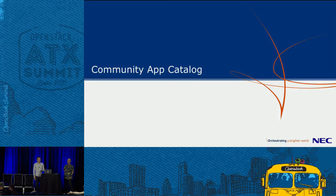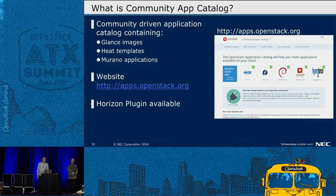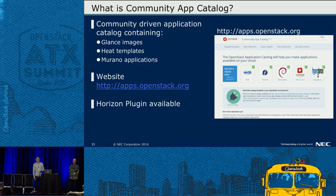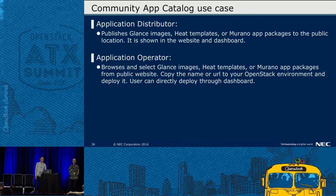Next is Community App Catalog. Community App Catalog is a community-driven application catalog containing Glance images, Heat templates, and Murano application packages. Community App Catalog's website is at apps.openstack.org. A Horizon plugin is also available. Use case: application distributor publishes Glance images, Heat templates, or Murano application packages to a public location. It's shown on the website and dashboard. Application operator browses and selects Glance images, Heat templates, or Murano application packages from the public website.